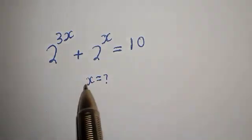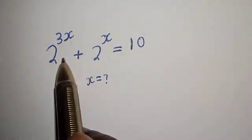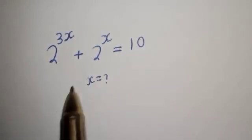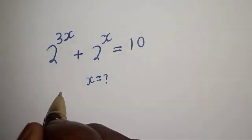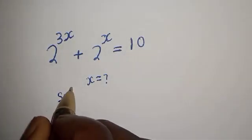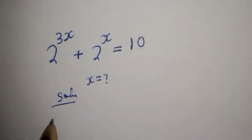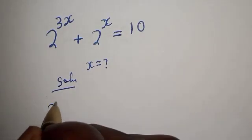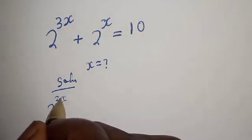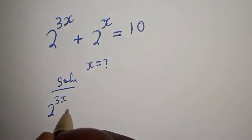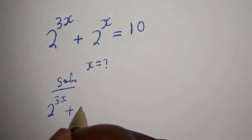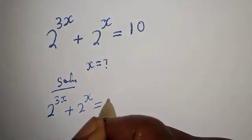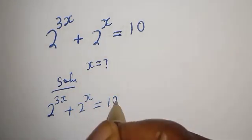Hello. How to solve for x from this equation: 2 raised to power 3x plus 2 raised to power x is equal to 10. Solution.